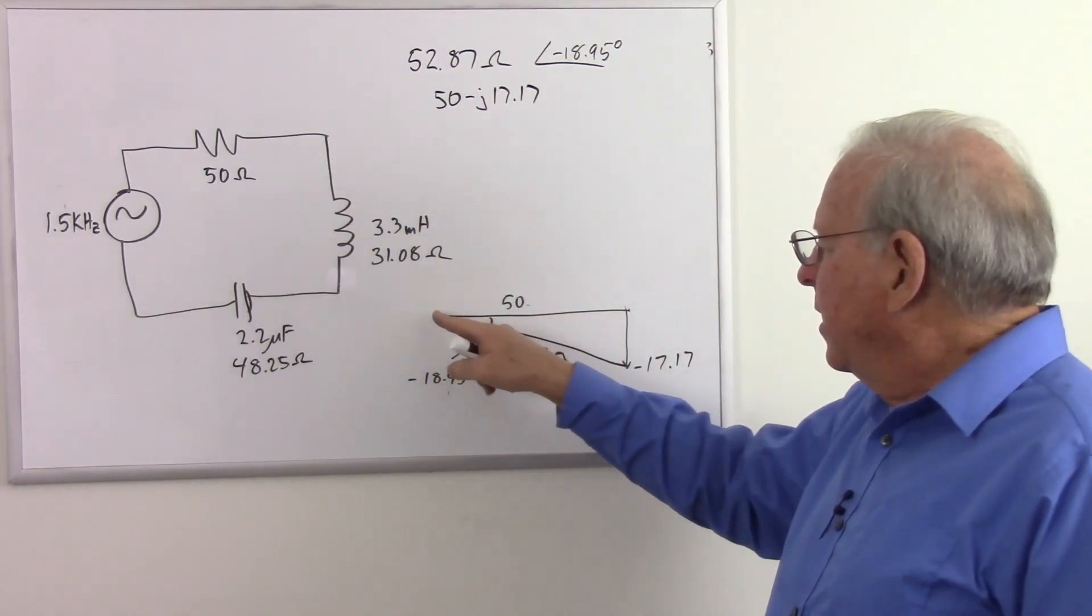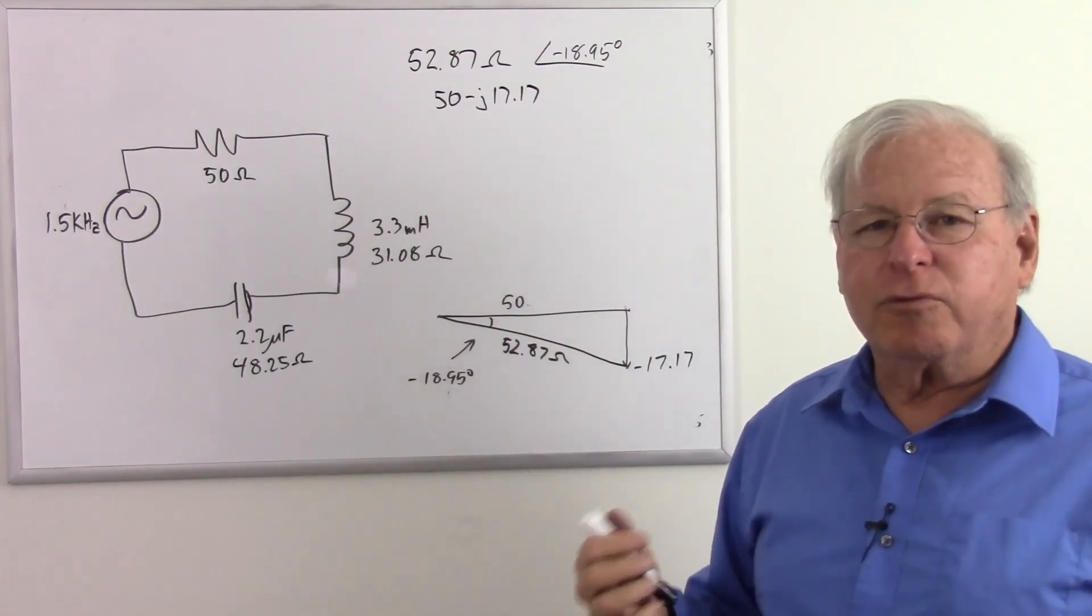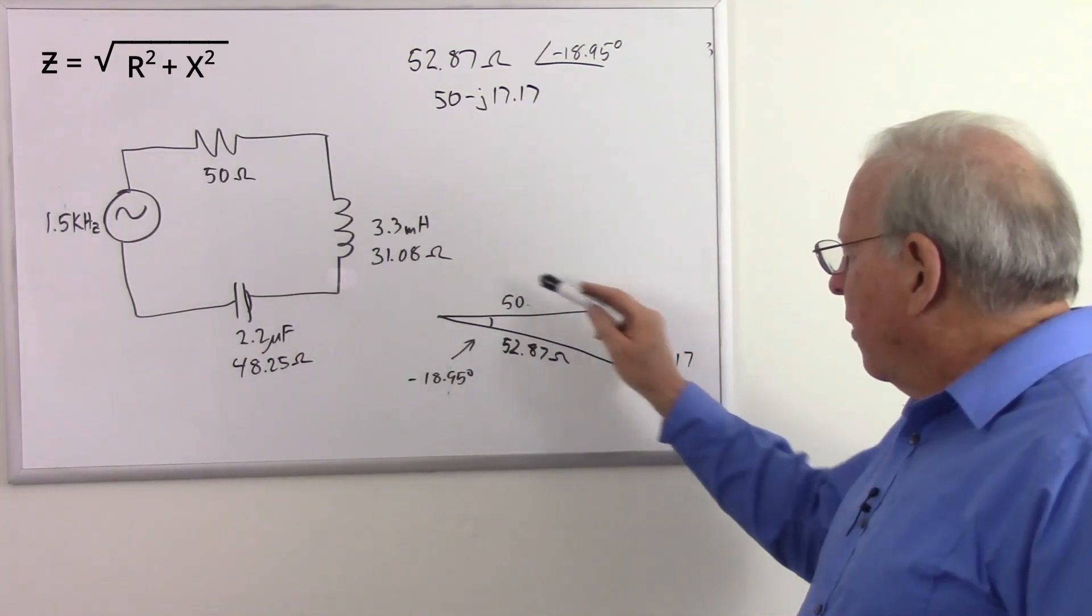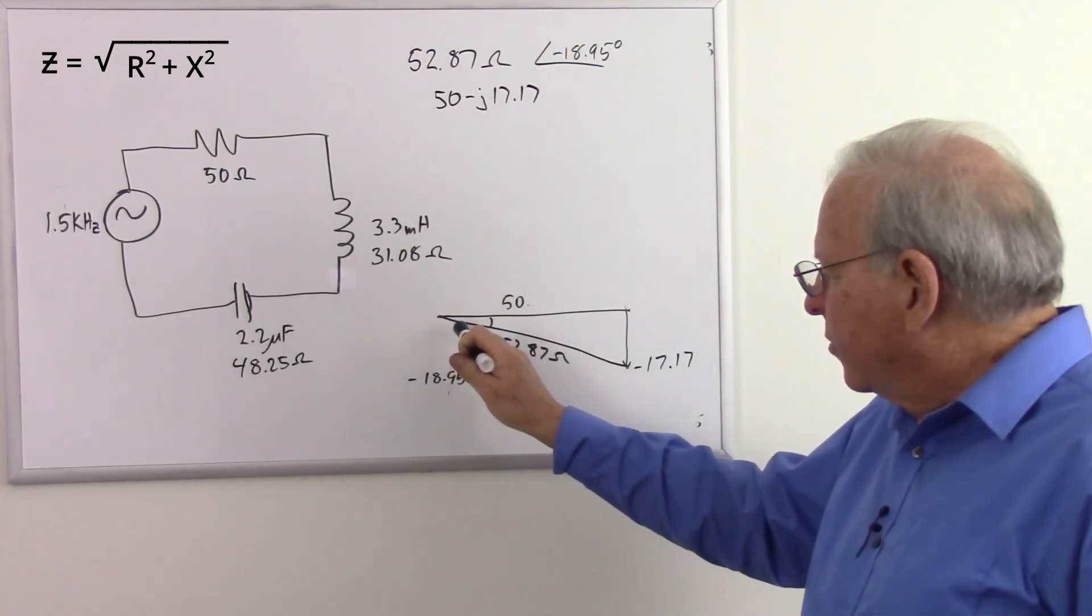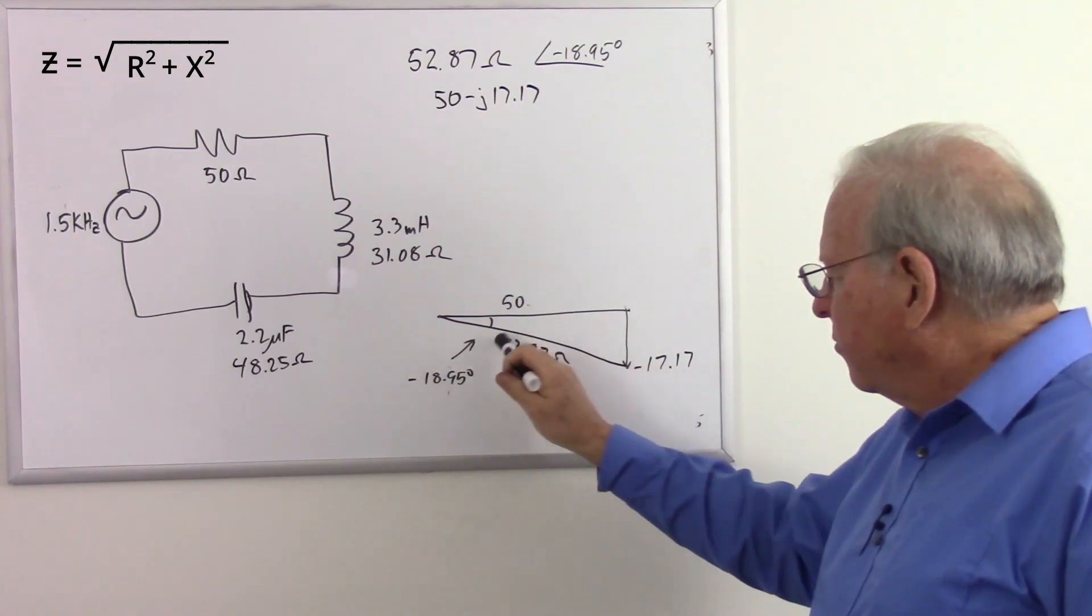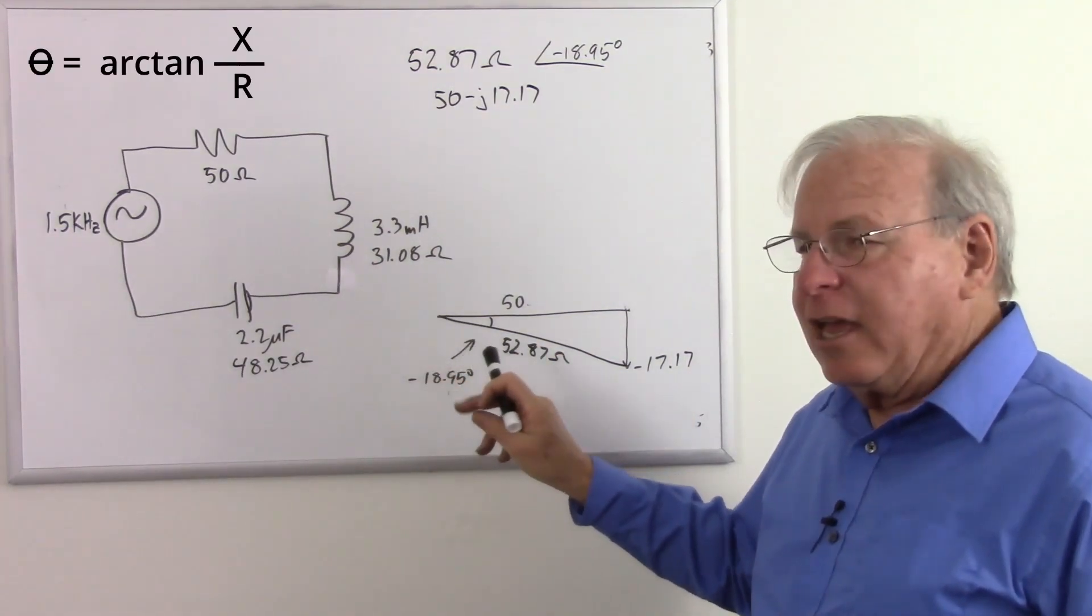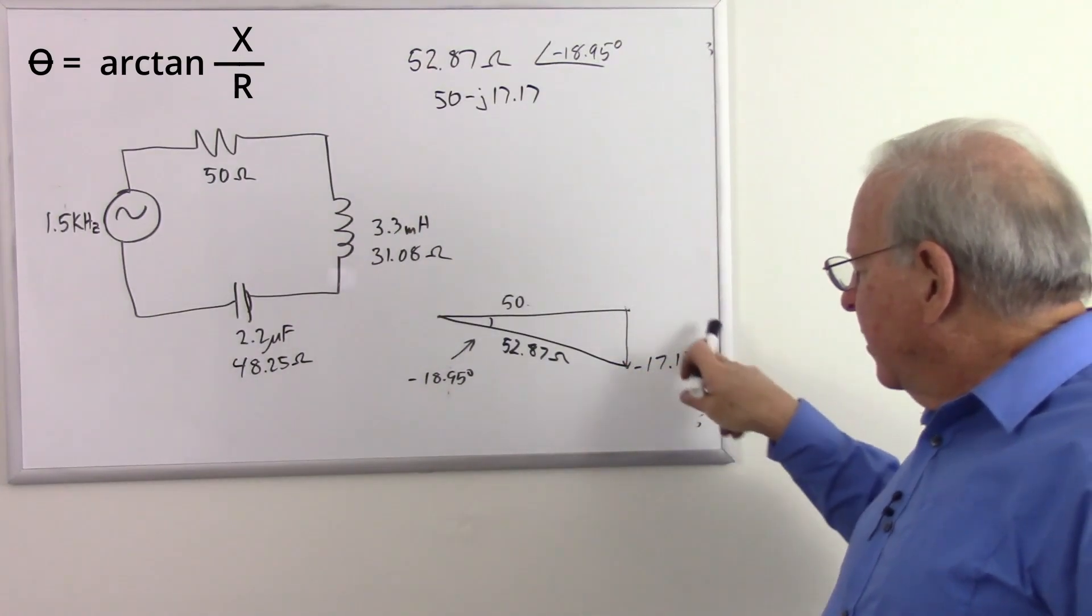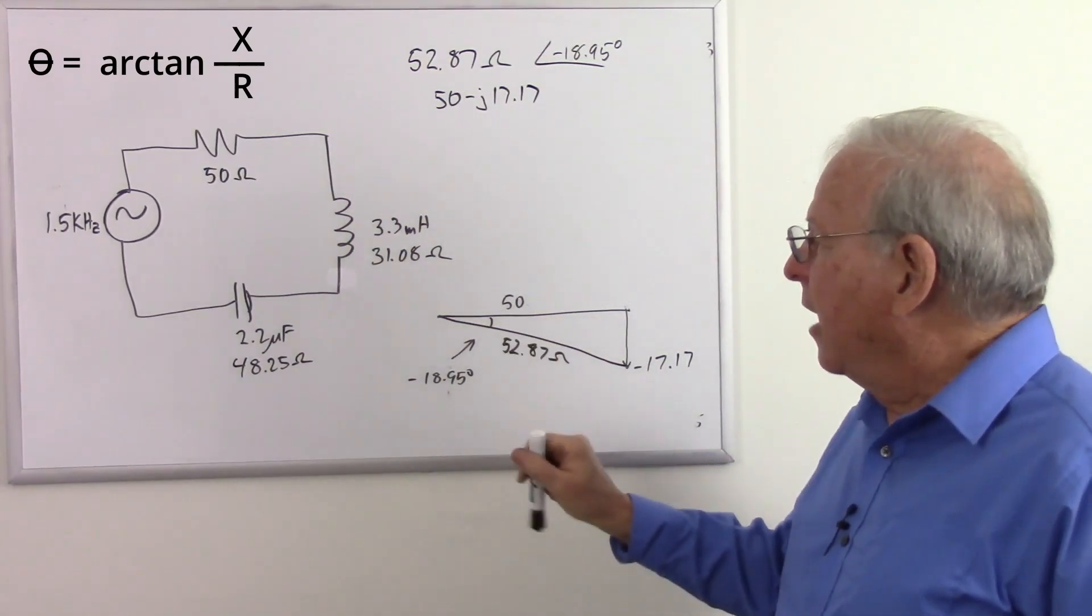Our resistance is the base. And then the impedance will be the hypotenuse of that triangle, which we use the Pythagorean theorem. Our resistance squared plus our reactance squared. Add those together, then take the square root, gives us the length of the hypotenuse. There that is. And then to calculate the phase angle, we take the reactance, divide that by the resistance, take the arctangent of that result, and that gives us the angle.